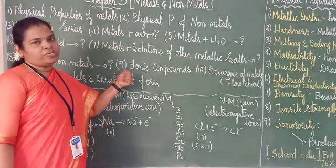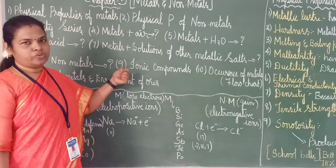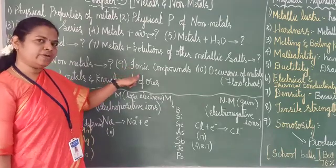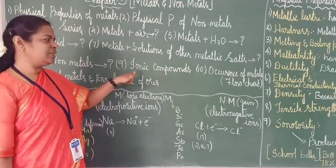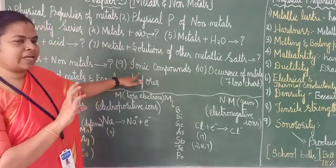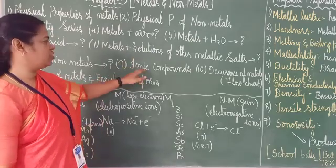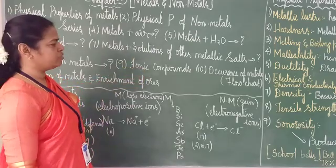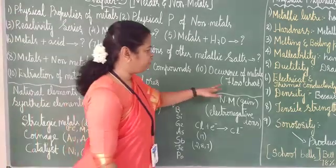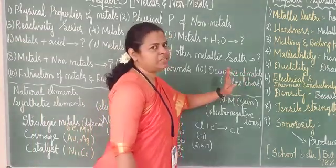We will also study about what happens when metals combine with other non-metals. I told you about ionic compounds and covalent compounds. We are going to study ionic compounds — their definition, characteristic features, and properties of ionic compounds. We will also study the flow chart for the occurrence of metals.